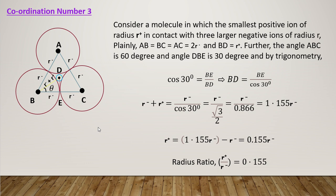Therefore the radius ratio R+ divided by R− is equal to 0.155. This is the radius ratio for Coordination Number 3, where one smaller cation is surrounded by 3 larger anions in an equilateral triangle arrangement. This was calculated using trigonometry applied to the equilateral triangle geometry.